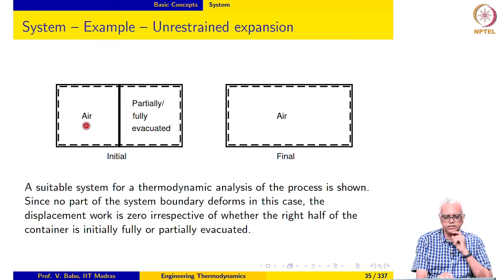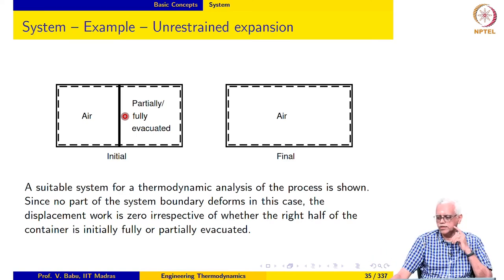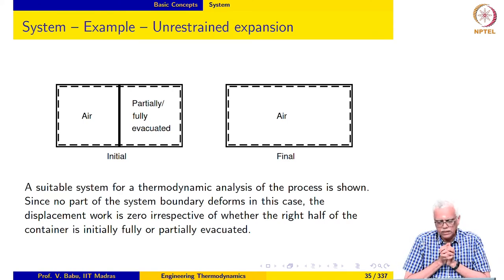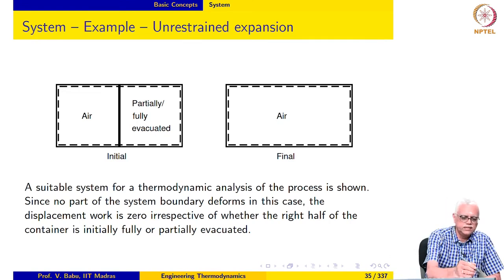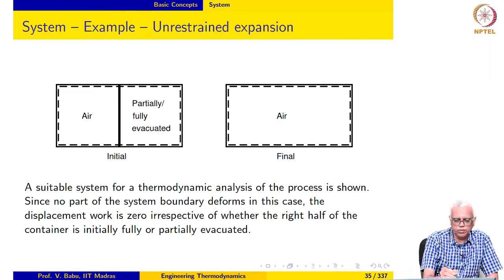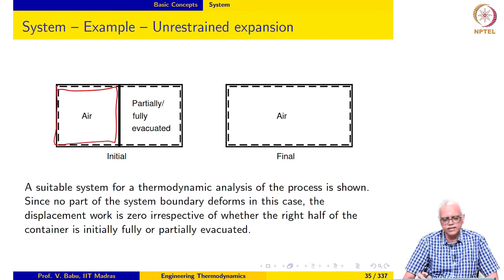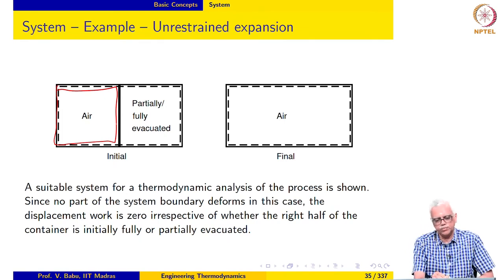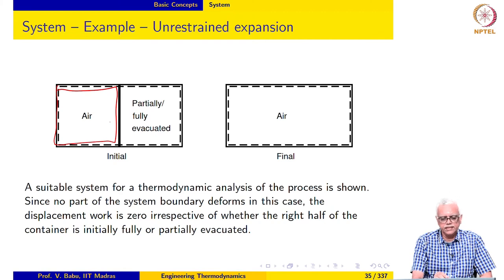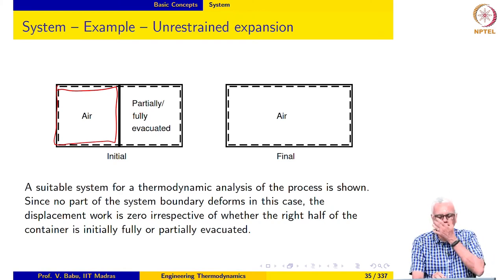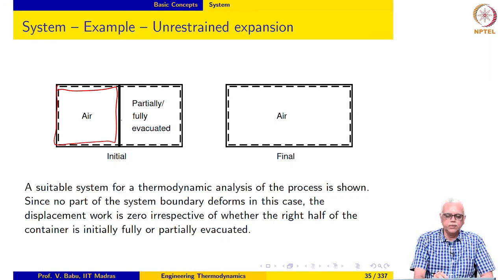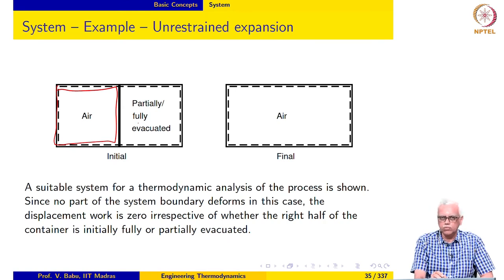Initially, we have air on the left side of this rigid vessel; there is a partition and the right side is partially or fully evacuated. The partition is removed and the air expands to occupy the entire container and comes to equilibrium. It may be tempting to define a system that looks like this — containing the air — and argue that as the air expands the system boundary deforms to contain the same amount of air. The difficulty is that the air undergoes a rapid expansion, so we must have a method to keep track of the system boundary, which is almost impossible.